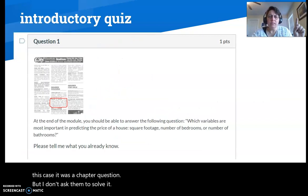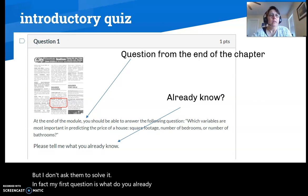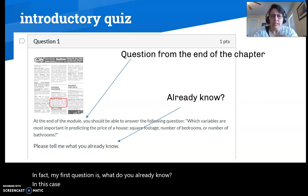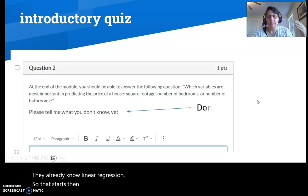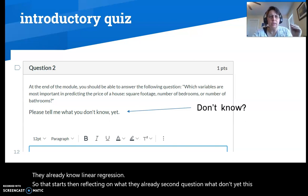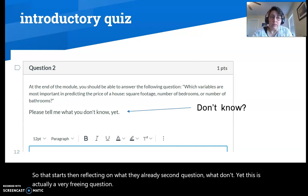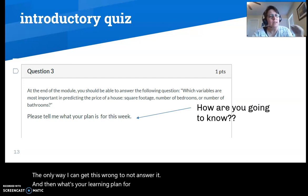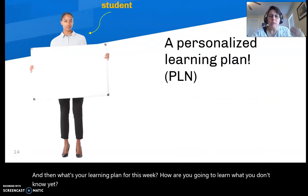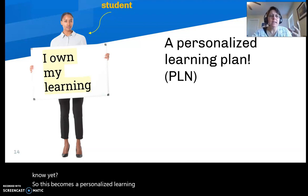I also pull a question from the end of the unit. In this case it was a chapter question. But I don't ask them to solve it. In fact, my first question is: what do you already know? Well, in this case the question had to do with multivariate regression. Well, they already know linear regression. So that starts them reflecting on what they already know. Second question: what don't you know yet? This is actually a very freeing question. The only way to get this wrong is to not answer it. And then: what's your learning plan for this week? How are you going to learn what you don't know yet?